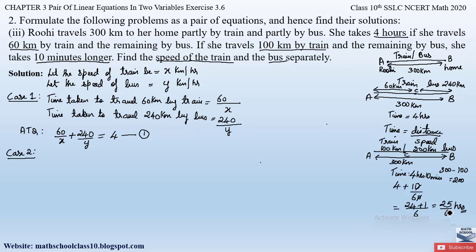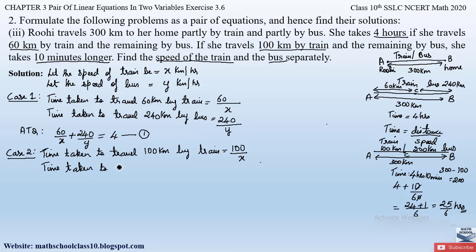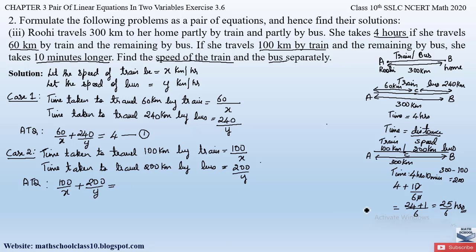Time taken to travel 100 kilometers by train is 100/x, and time taken to travel 200 kilometers by bus is 200/y. According to the question, total time is 25/6 hours. So equation 2 is: 100/x + 200/y = 25/6.